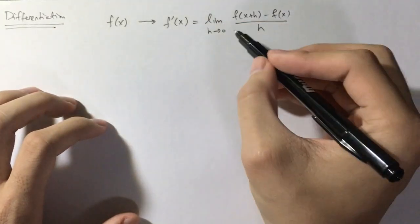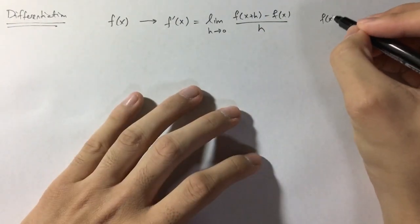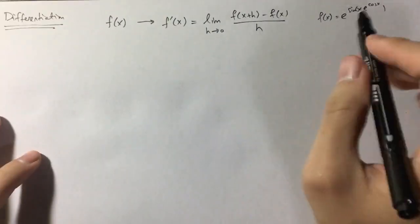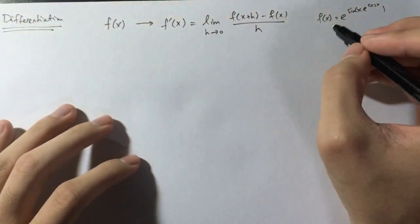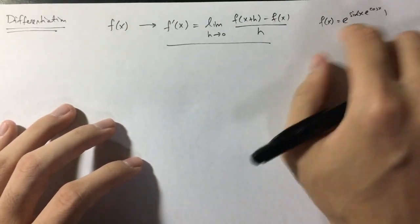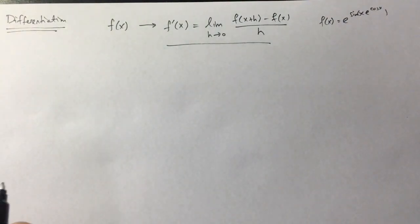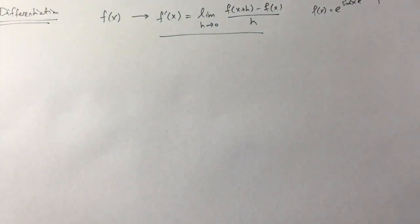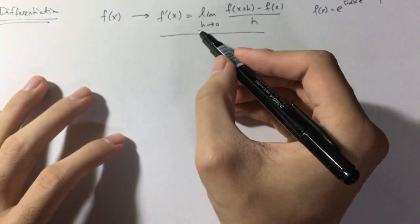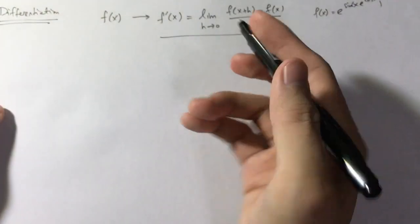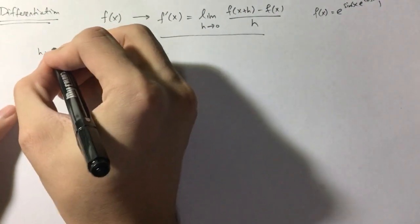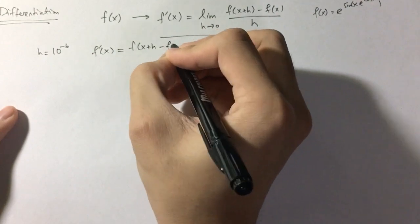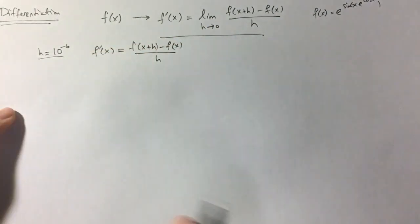What if I have a function where I cannot compute this limit analytically? Maybe I have something weird, like f of x equals e to the power of sine of x multiplied by e to the power of cosine of x — something really complicated. How can I use this definition to get the derivative numerically? Well, one way is to exploit what the limit actually means. The intuition is that h approaches 0 — it gets closer and closer to 0. So maybe we can just pick a really small h, one that gets really close to 0, and simply work out what this fraction is. Maybe h equals 10 to the minus 6. Then f prime of x will just be f of x plus h minus f of x, all over h, for that small h.